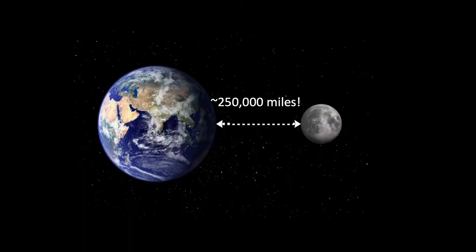The white matter consists of axons — the tracts of these neurons — like information superhighways within the CNS. If you were to line those axons up end to end, they would stretch a quarter of a million miles — about the distance between the Earth and the Moon.